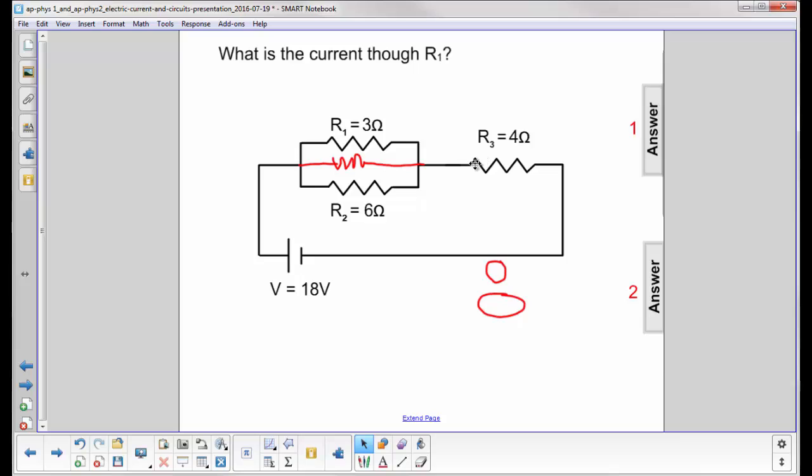And now you can see more clearly why whatever current comes out of the battery, splits up here, rejoins, and goes through R3. So let's erase this and pull out our final answer.